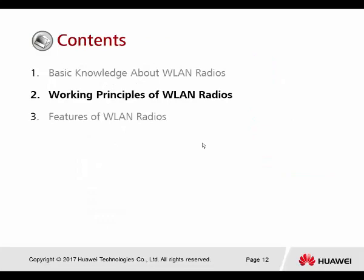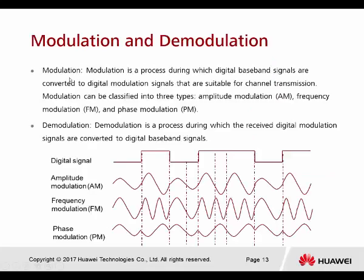Number two: the working principle of WLAN radio — modulation and demodulation. Modulation is the process during which digital baseband signals are converted to digital modulation signals suitable for channel transmission. For all digital signals that want to be transmitted, the first step is modulation — converting the information based on what you want to transmit. When the receiver receives the radio wave, it performs demodulation to convert it back to a digital signal.